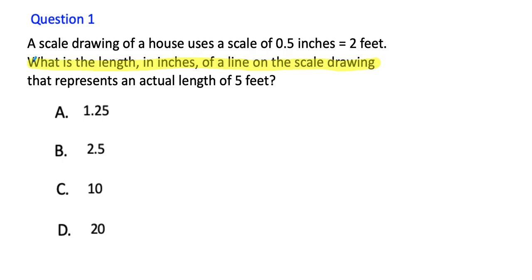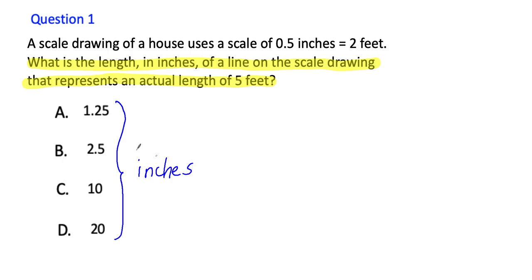You actually have access to an electronic highlighter on the GED math test. It says what is the length in inches? That's what I'm looking for — the length in inches. So that tells me that these answers are inches. In other words, this represents 1.25 inches, this represents 10 inches, and so on. And what I'm trying to figure out is if I have an actual length of five feet, how would that show up on my scale drawing in inches?